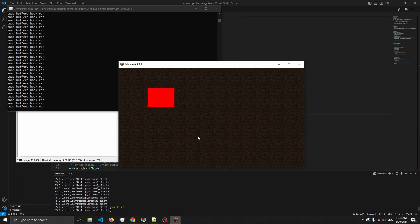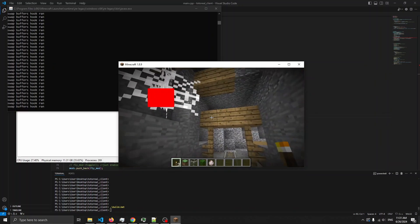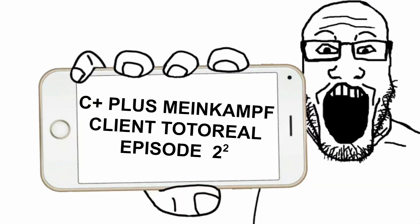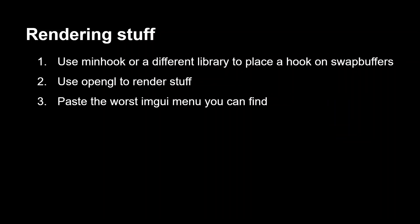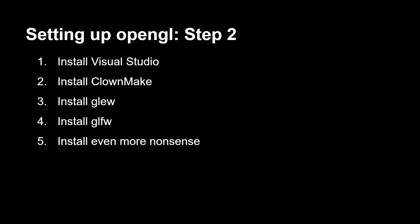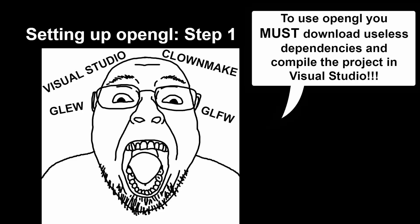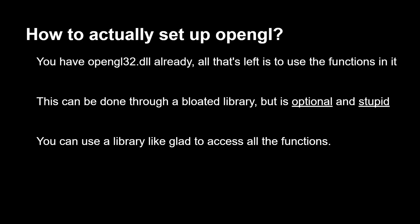Alright, so we got swap buffers working. Now let's see how we do render stuff. First thing we do is hook swap buffers - because we did that, now we need to use OpenGL. Step 2 in setting up OpenGL is to install Visual Studio, GLEW, GLFW, and other useless libraries. But what is step 1? Step 1 is believing some guy who says you need all of this with no further explanation, which is really stupid. In reality, you already have OpenGL on your computer - all you need to do is just use it. All those build libraries are optional. Visual Studio is optional. We can just use something like GLAD to access all the functions, which I'll show you how to set up.